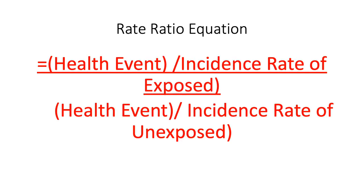Next, we have the rate ratio equation as stated on this PowerPoint slide. The first part of the rate ratio equation is the health event divided by the person time — that is, the incidence rate of the exposed group. The second part is the health event divided by the person time for the unexposed group.